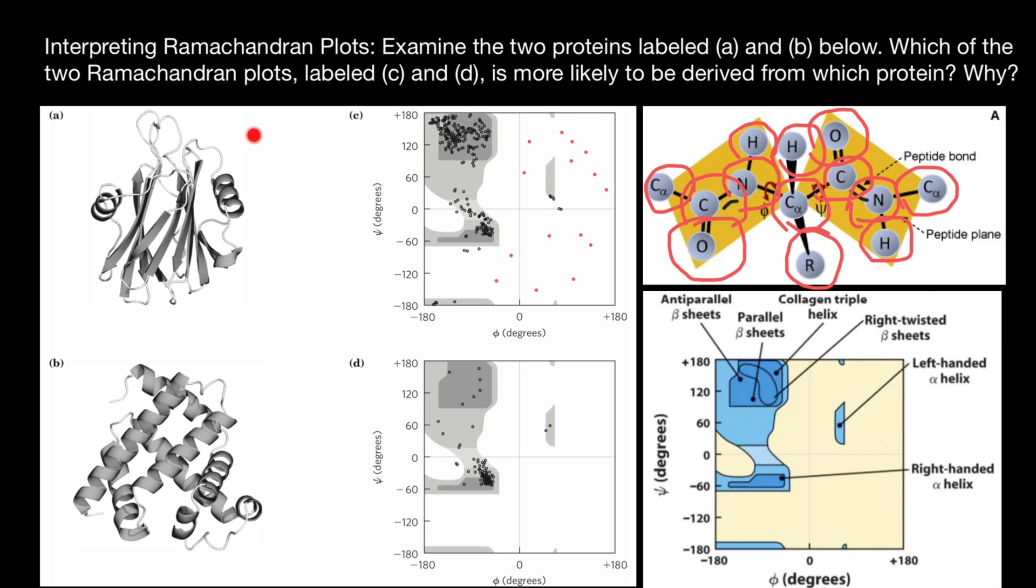Now take a look at this protein, and we see that this protein mostly consists of beta sheets, and beta sheets are concentrated here. All these possible variants of the angles would be here. And now let's take a look at this picture. What we see here, that most of the numbers are in this area. That means that this Ramachandran plot represents this protein, A and C.